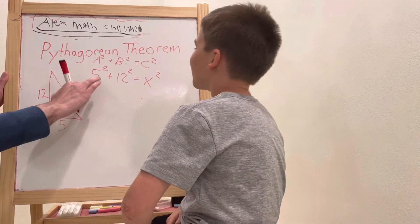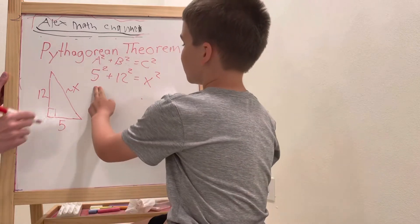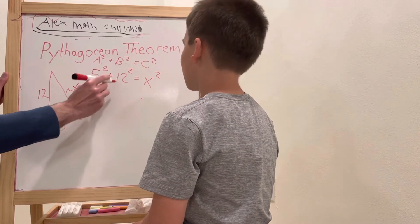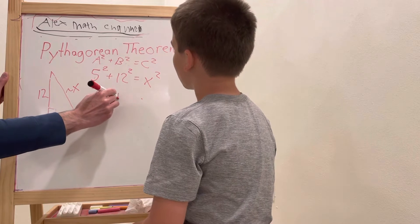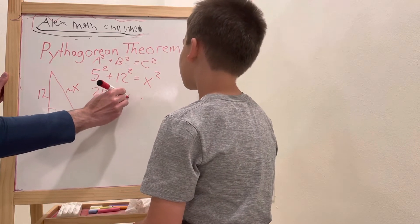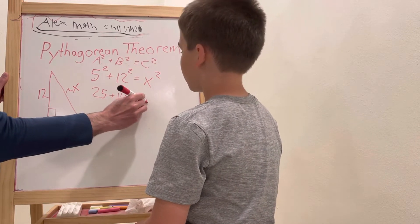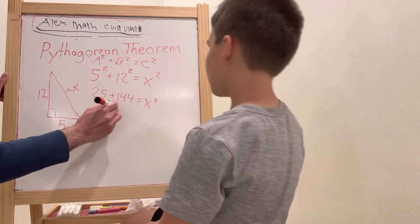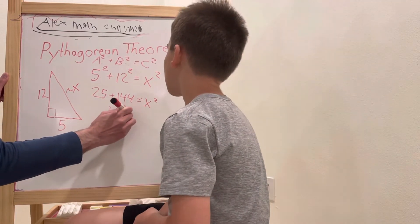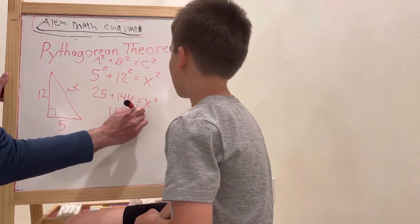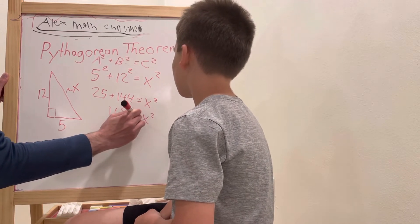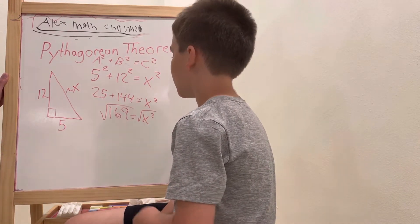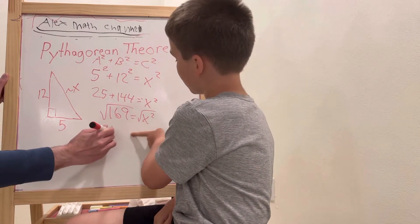So what's 5 squared? 5 squared is 25, plus 12 squared which is 144. That equals 169. So 169 equals x squared. We'll take the square root of both sides, and that gives us 13, which is x.